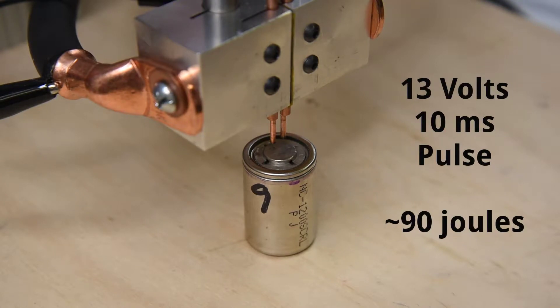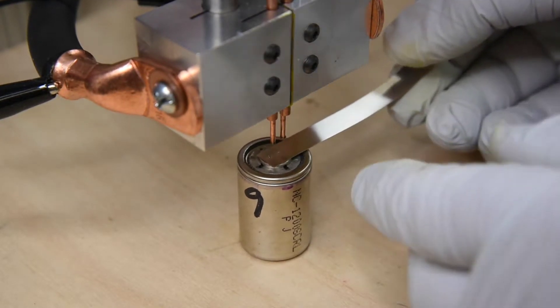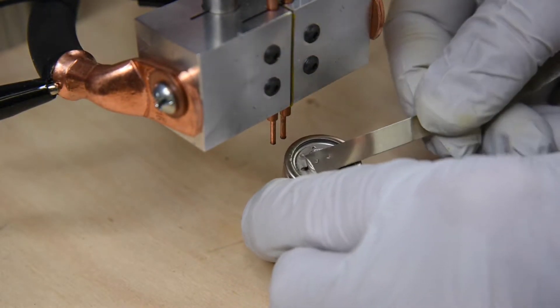At a little under 90 joules, this I felt was the best mechanical spot weld. Almost no stick to the tips and not a lot of tip impression on the nickel strip.